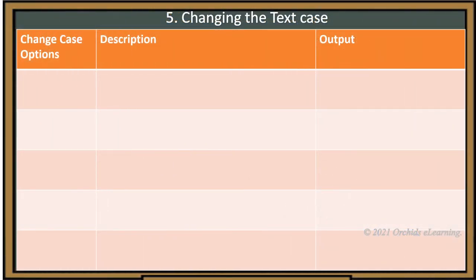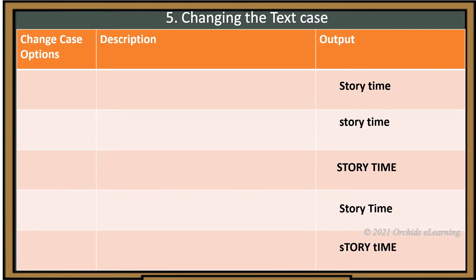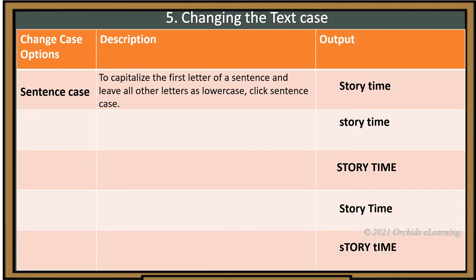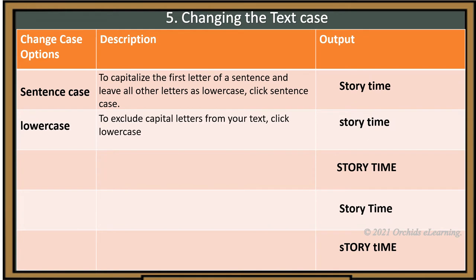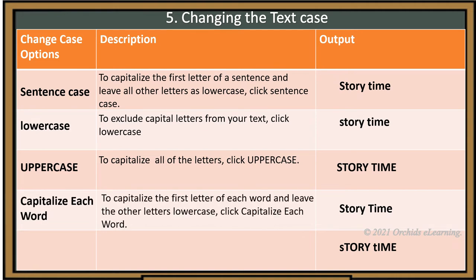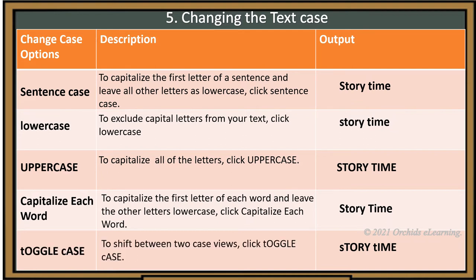Changing the text case: you can change the capitalization of words, sentences, or paragraphs using the Change Text Case option. The options are: Sentence case — capitalizes the first letter of a sentence, leaving all other letters lowercase. Lowercase — excludes capital letters from your text. Uppercase — capitalizes all letters. Capitalize Each Word — capitalizes the first letter of each word. Toggle Case — shifts between two case views.